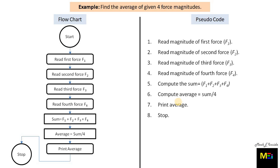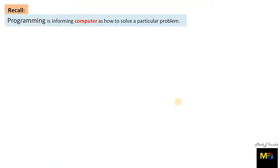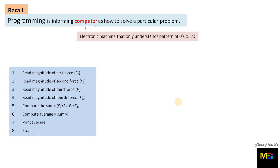Programming is informing computer as how to solve a particular problem. But, we know computer is an electronic machine that only understands the pattern of zeros and ones or you can say on or off. As in the last slide, we have wrote some steps that are shown here. Ask yourself a question, are these instructions understood by computer? As per the definition mentioned above about computer, no, these instructions are not understood by computer directly.